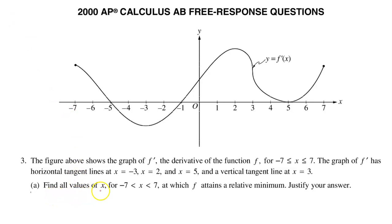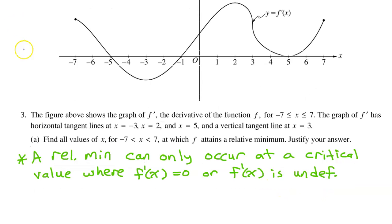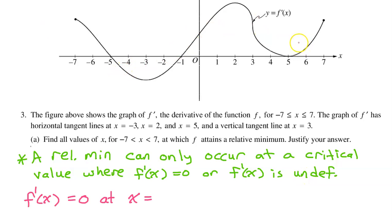Part A: Find all values of x between negative 7 and positive 7 at which f attains a relative minimum. Justify your answer. A relative minimum can only occur at a critical value where f prime is equal to 0 or f prime is undefined. Looking at the graph of f prime, f prime equals 0 at x equals negative 5, x equals negative 1, and x equals 5.